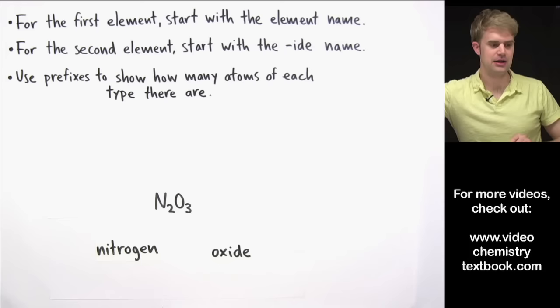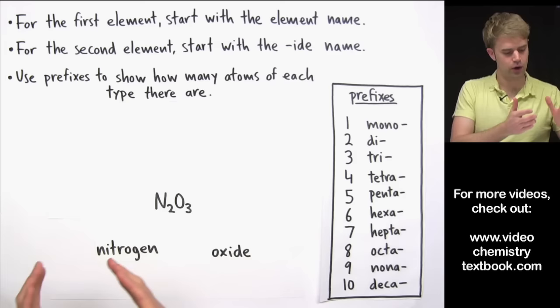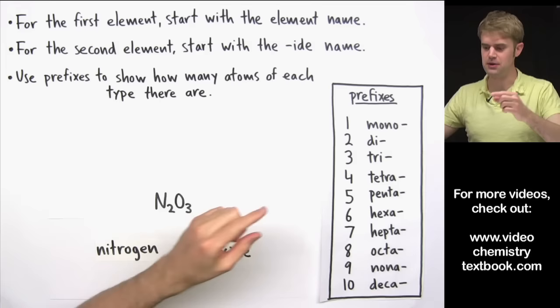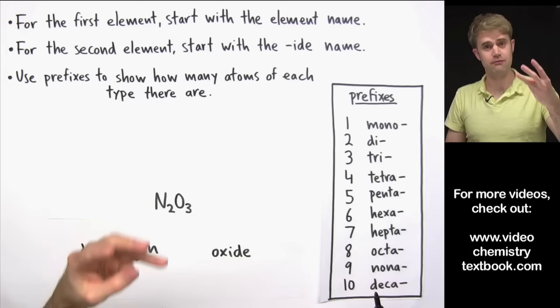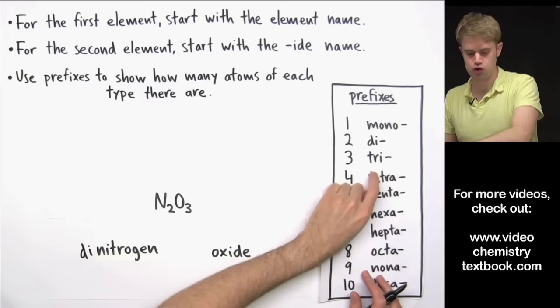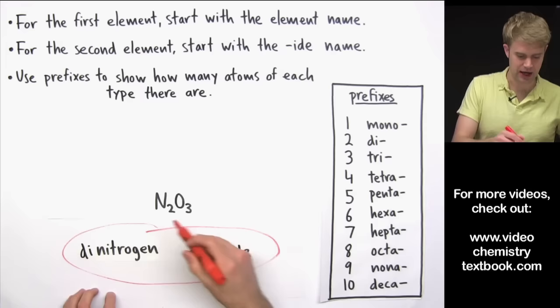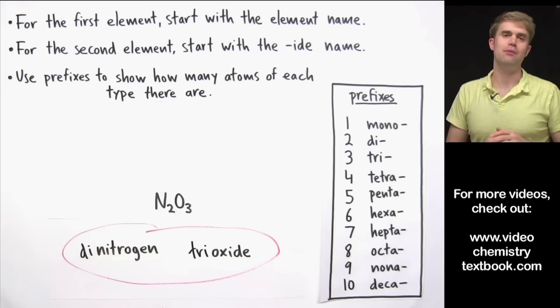Now use prefixes to show how many atoms of each type there are. The prefixes are little tags put on the front of each name. N₂ means two nitrogens, so we use the prefix 'di' — dinitrogen. O₃ means three oxygens, so we use 'tri' — trioxide. The name for this compound is dinitrogen trioxide. We put the element name first, the IDE name second, and used prefixes to indicate how many atoms of each type we had.